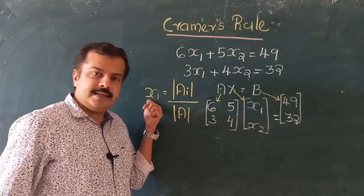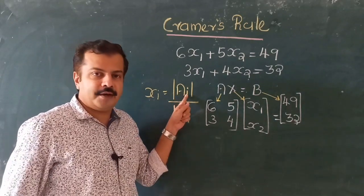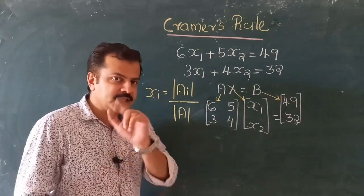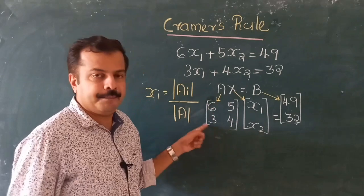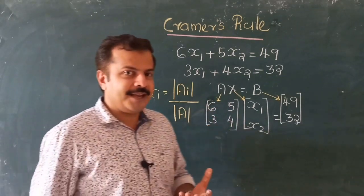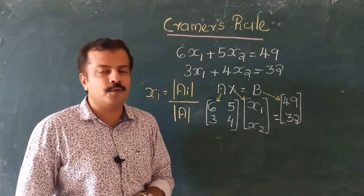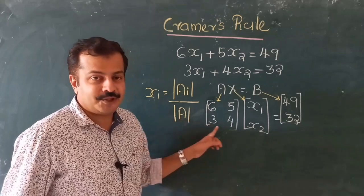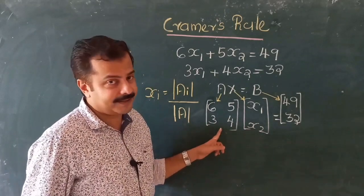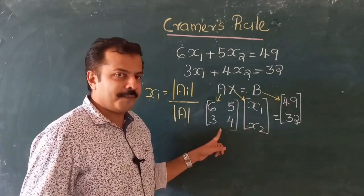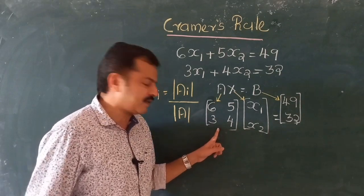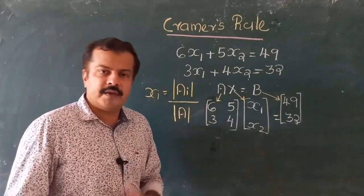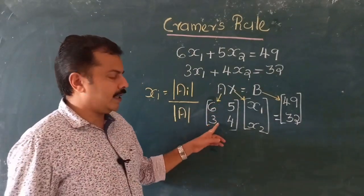Here, xi is the unknown variable, Ai is the determinant of a special matrix we will construct, and the determinant of A is the determinant of the coefficient matrix. We can use Cramer's rule only when the coefficient matrix A is a non-singular matrix. A singular matrix has a determinant of zero, meaning there may be a relationship between rows and columns. For non-singular matrices like here, we can easily apply Cramer's rule.